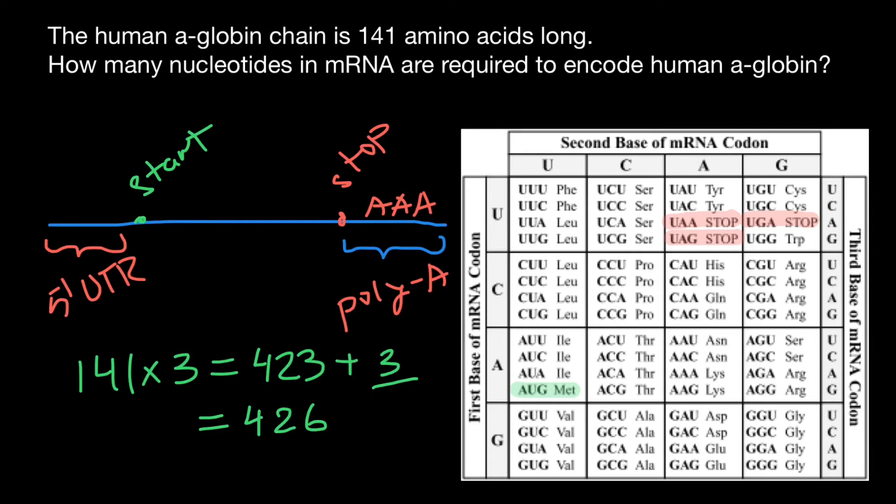These are not going to be translated into the amino acid chain, but take a look. Our question is how many nucleotides in messenger RNA are required to encode human alpha-globin?